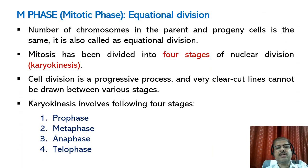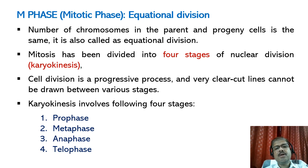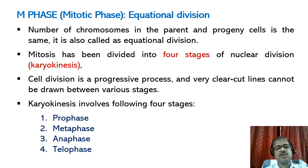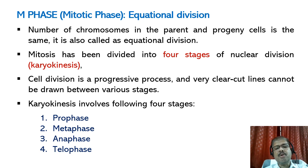The M phase, or mitotic phase, is also called equational division, since the number of chromosomes in the parent and progeny cells is the same. For convenience, mitosis has been divided into four stages of nuclear division — karyokinesis. It is essential to understand that cell division is a progressive process and clear-cut lines cannot be drawn between various stages. Karyokinesis involves four important stages: prophase, metaphase, anaphase, and telophase.